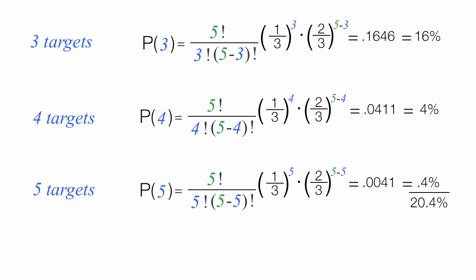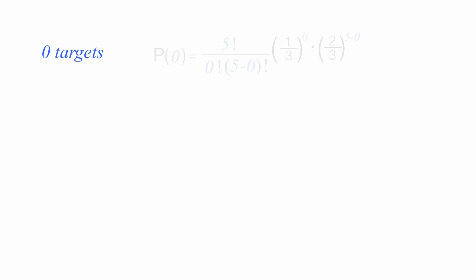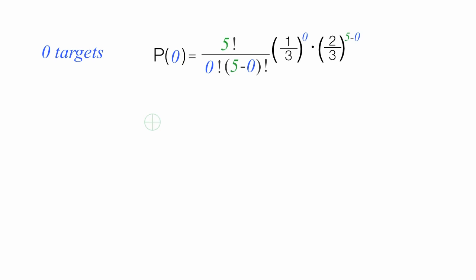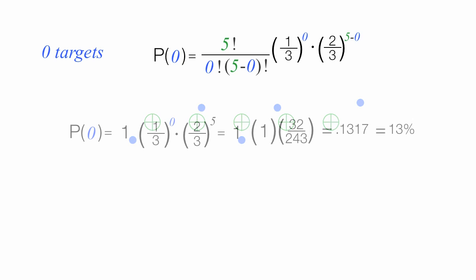You're probably wondering: what's the probability of not hitting any targets? Well, here's a little bonus. You take five shots and hit zero targets — that's about 13%. You can pause the video and look at the calculations if you like.